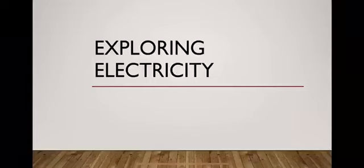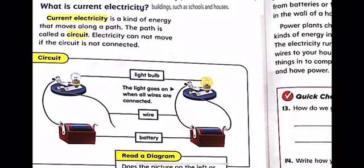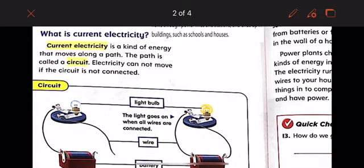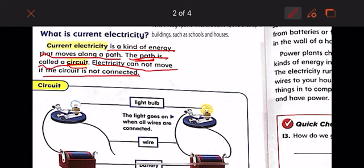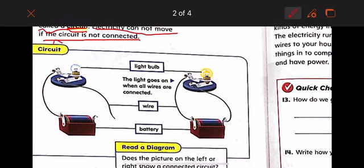Our lesson this week is about exploring electricity. What is current electricity? Current electricity is a kind of energy that moves along a path. The path is called a circuit. Electricity cannot move if the circuit is not connected.